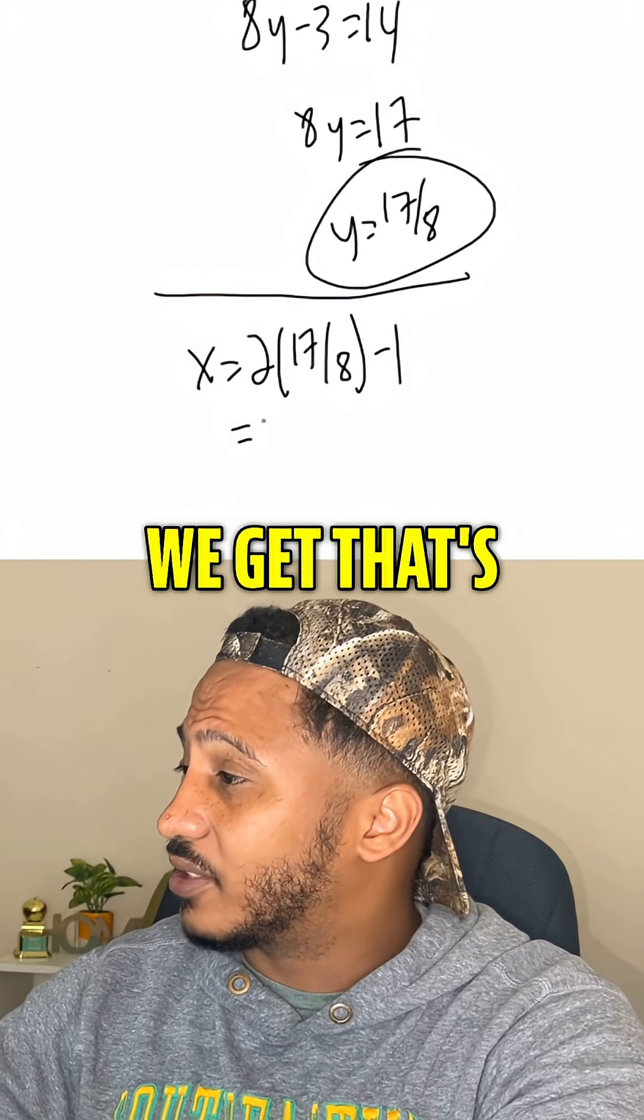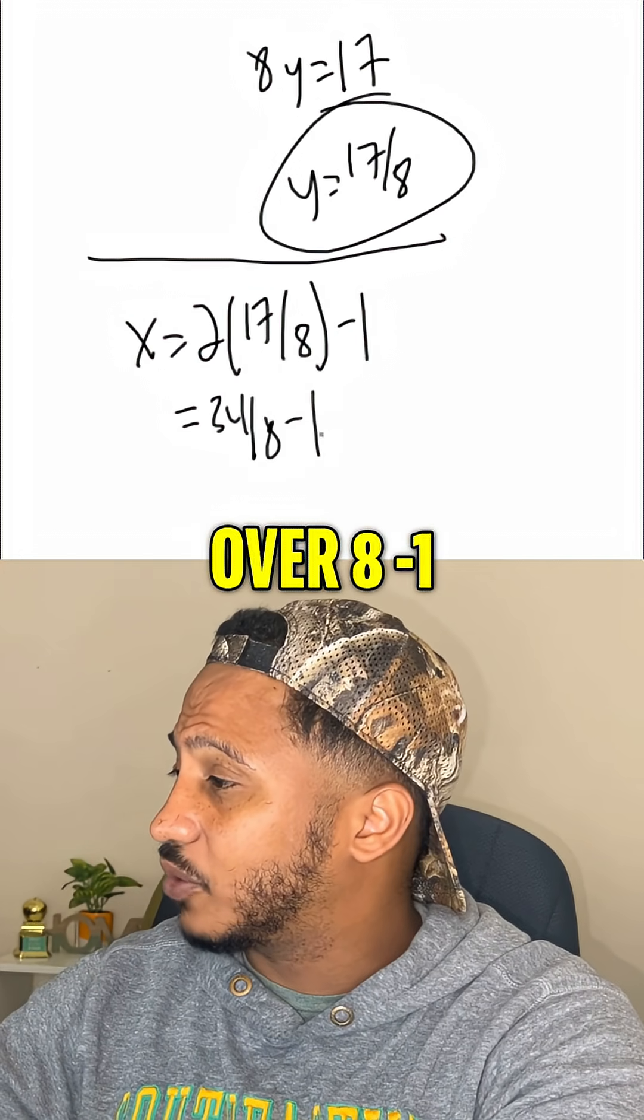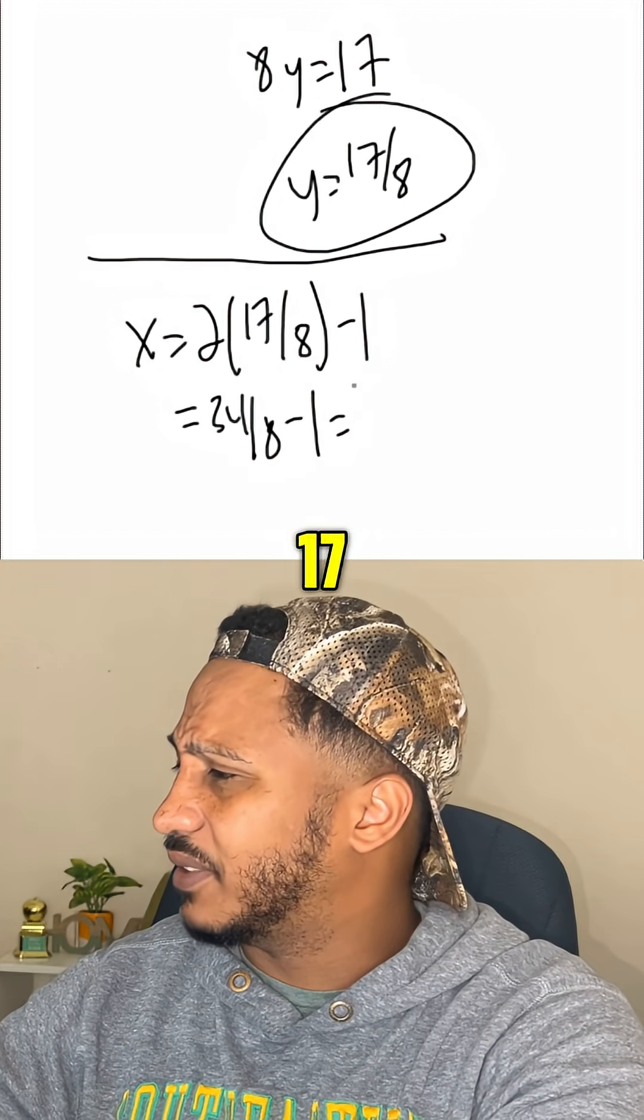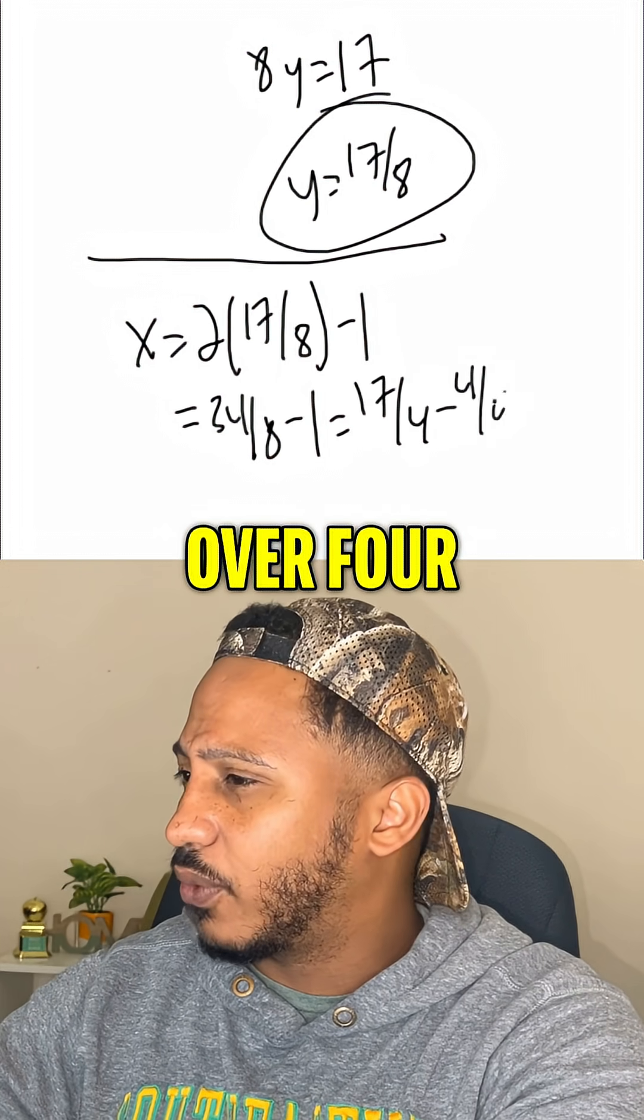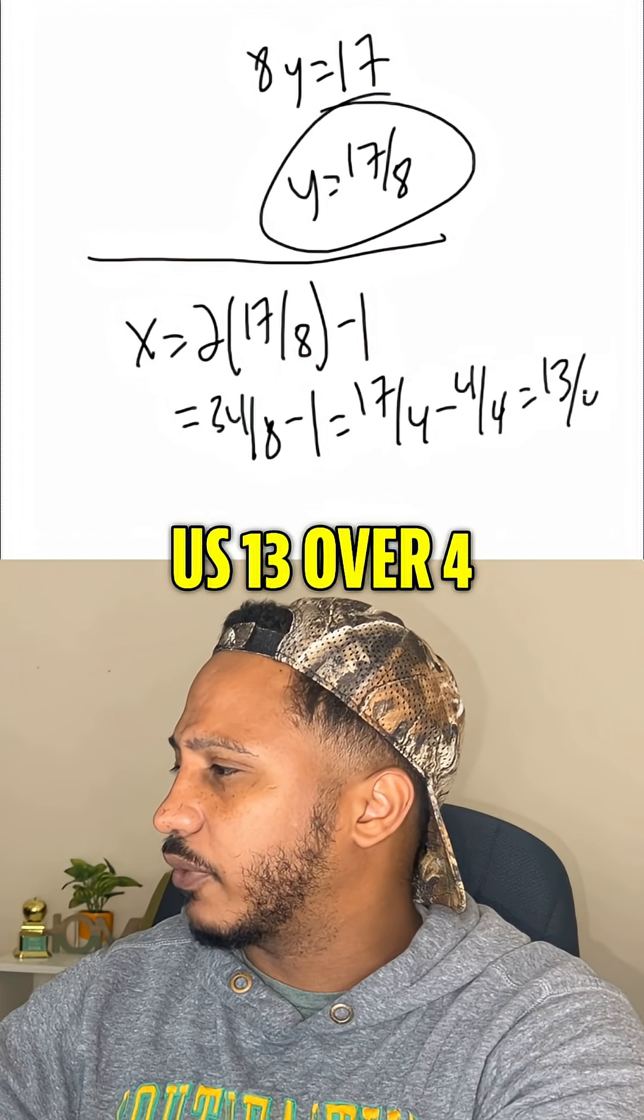Simplifying this, we get 34 over 8 minus 1. Or we can say that's 17 over 4 minus 4 over 4, which gives us 13 over 4.